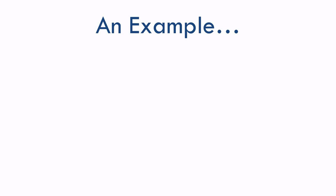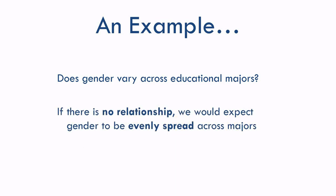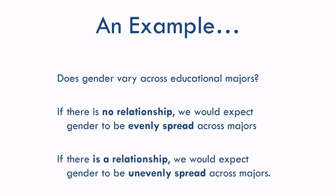Let's take one more example and look at how we'd actually do a chi-square. Suppose your university wants to know if there's a gender balance across educational majors — in this case, engineering, business, and psychology. If there's no relationship, we would expect an even spread of genders across majors. But if there is a relationship, we would expect an uneven spread. Some majors would have more of one gender and others less.